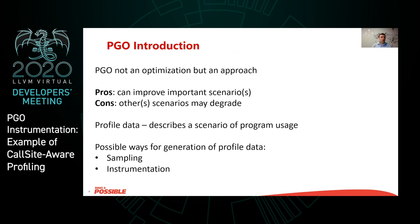Let's first recap what PGO is. It's profile guided optimization — but it's not actually one optimization; it's rather an approach where existing optimizations are extended to use information about program behavior that we collect additionally. That information helps to make better decisions during optimizations and can improve some important scenarios. But there is also a potential drawback: if profile information does not cover all important scenarios, some of those scenarios may degrade.